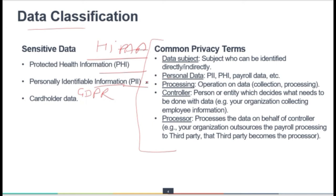Personal data could be PII, PHI, personal payroll data, your IP address, or several different data elements falling in the category of personal data. Processing refers to any operation on the data — it could be modification, usage, or collection.